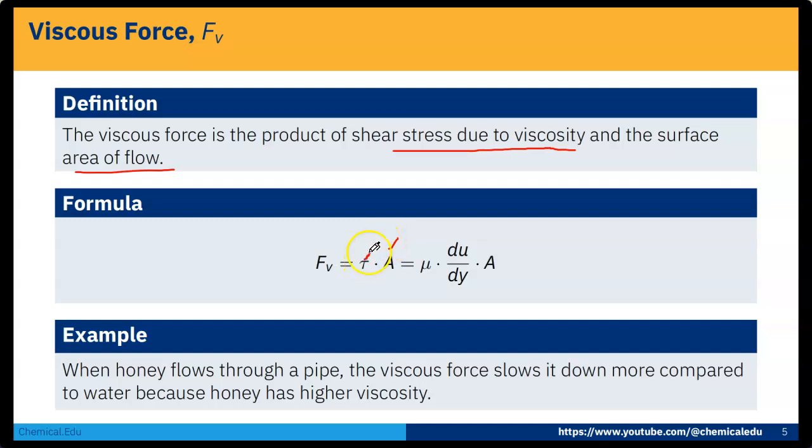So what is τ? τ is shear stress. According to Newton's law of viscosity, τ is μ into du/dy. μ is the viscosity, du/dy is velocity gradient, and A is the area.